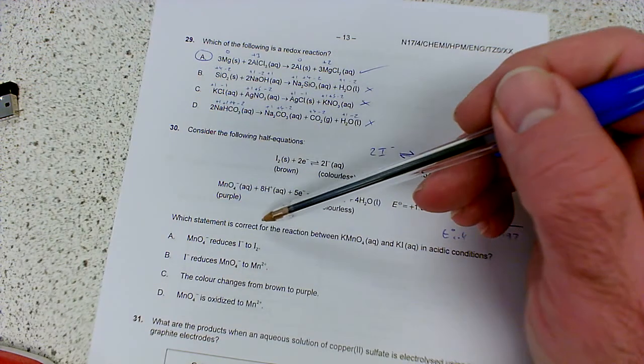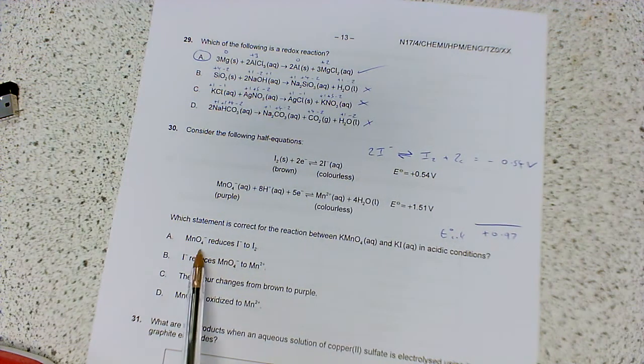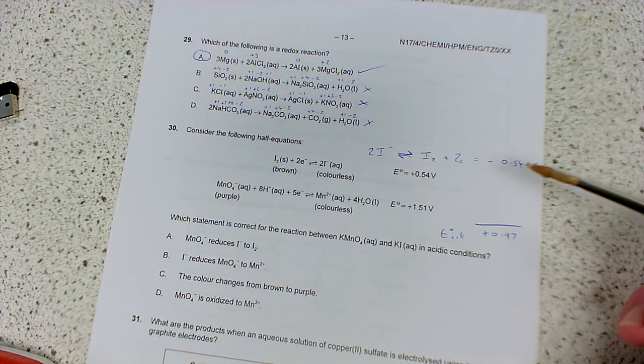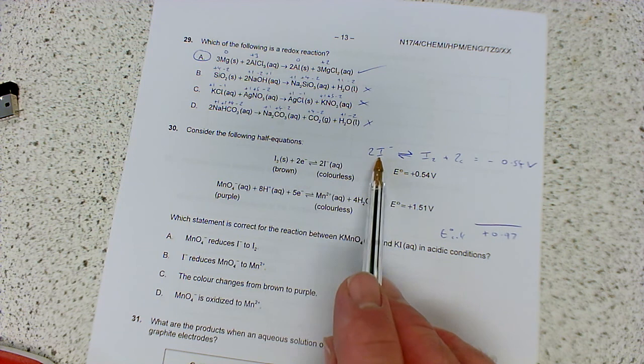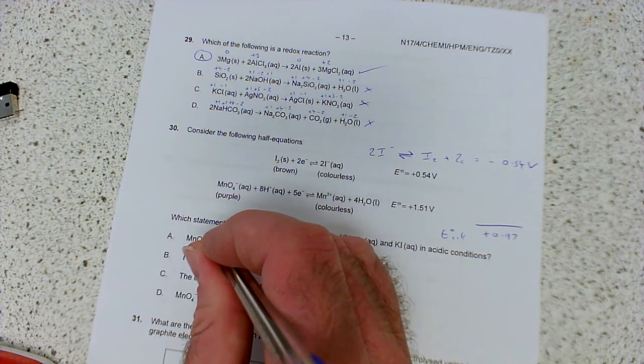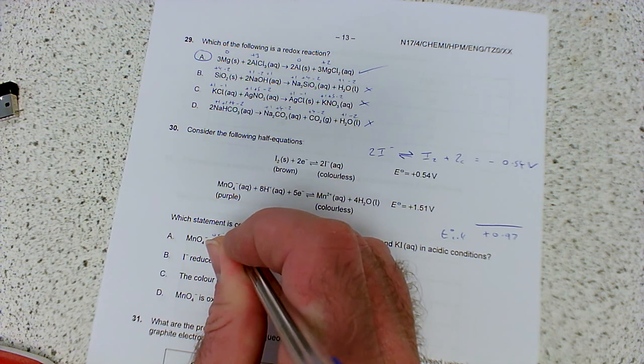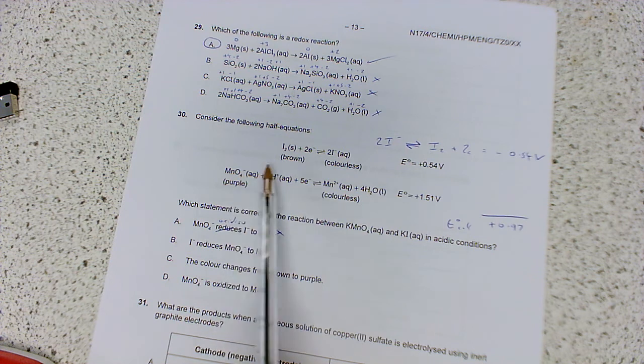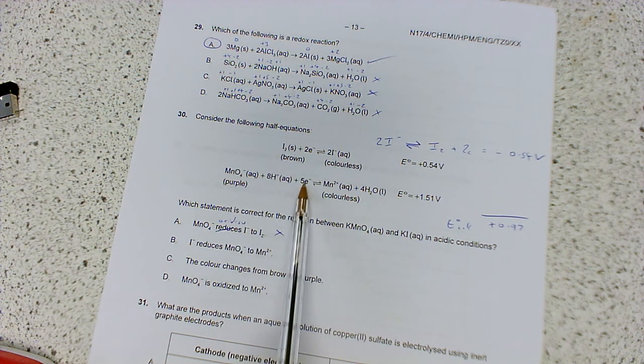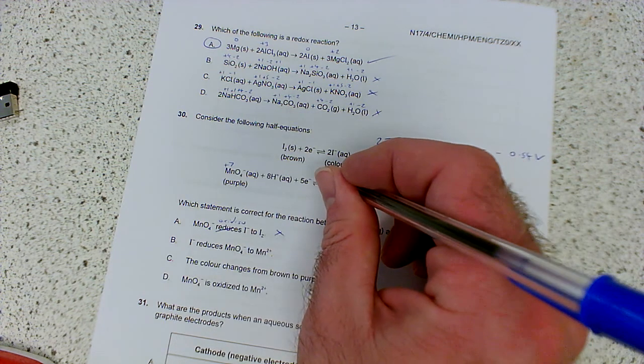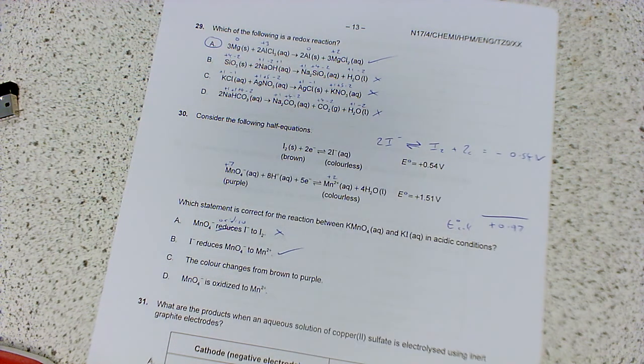So which statement is correct for the reaction between permanganate and KI? Permanganate reduces iodide to iodine. Well, it is going to turn iodide into iodine, but that's an oxidation. So it oxidizes iodide to iodine. So that one's incorrect. Iodide reduces permanganate to manganese 2+. Well, the manganate goes to manganese 2+, that's correct, and it gains electrons. It also goes from a plus 7 oxidation state here to a plus 2 there, so a decrease in oxidation number. So that's looking good to me.